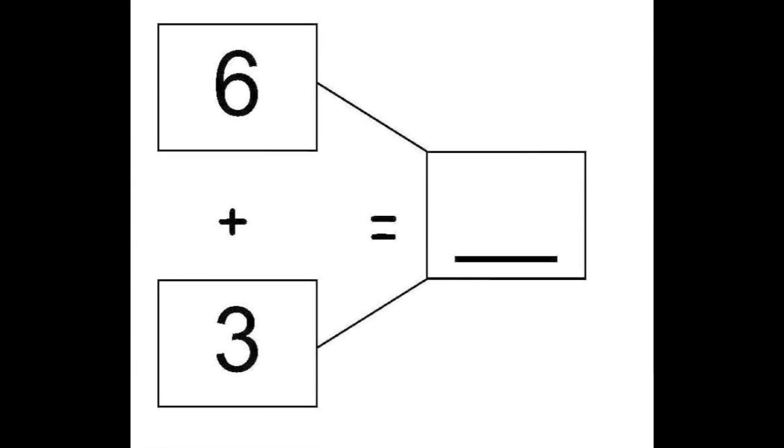Now let's look at the first problem on the bottom of the page. Here we have 2 numbers on the left that we need to add together to get the solution, which we will write in the box on the right. Here we have 6 plus 3. What is 6 plus 3? It's 9.